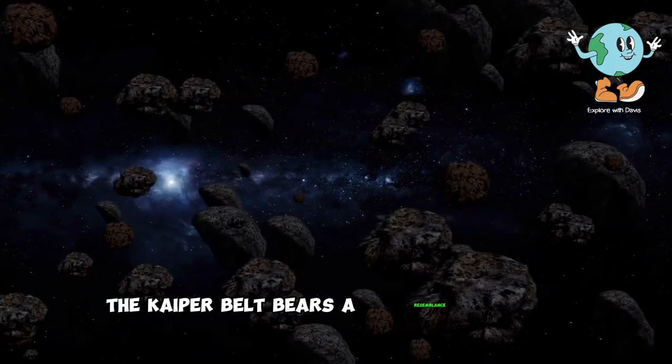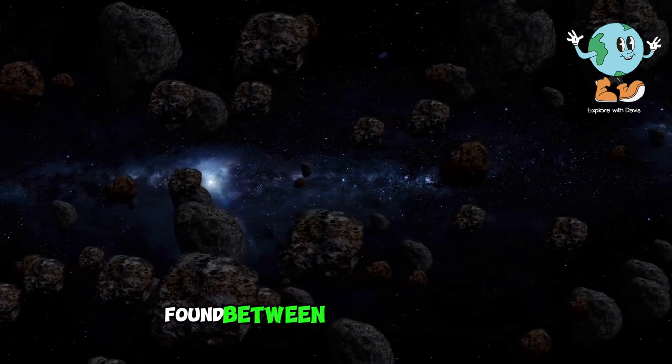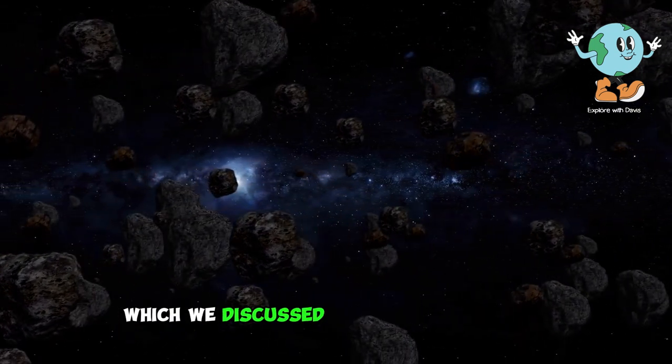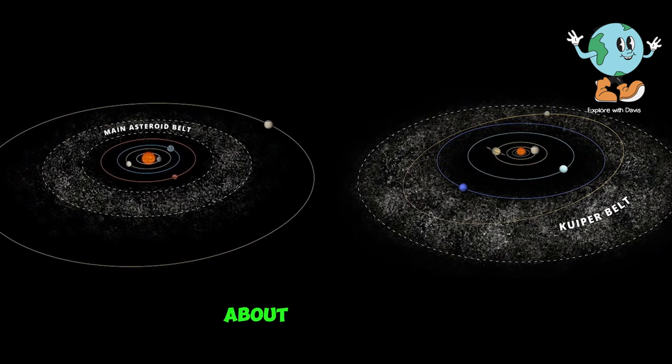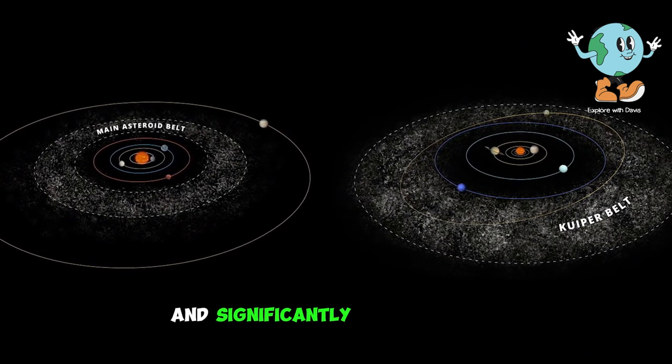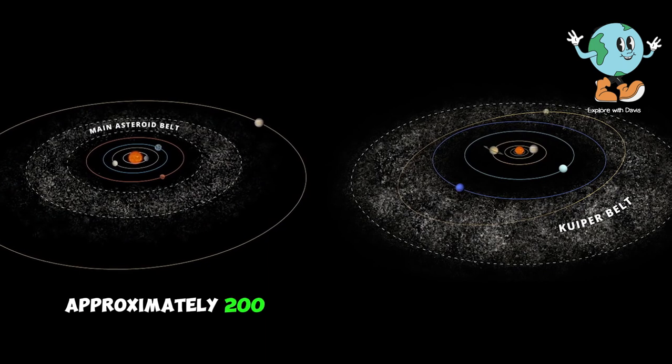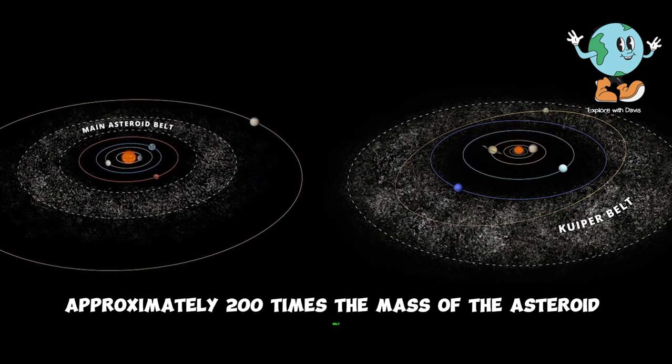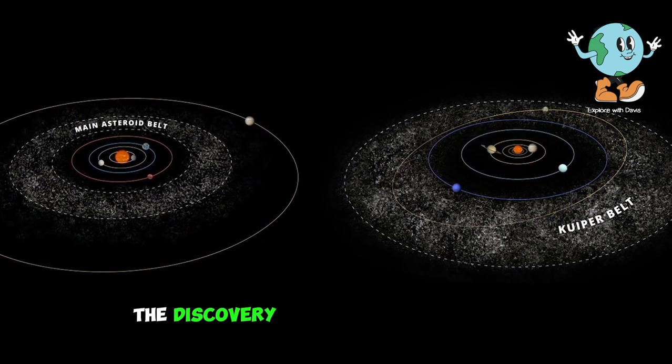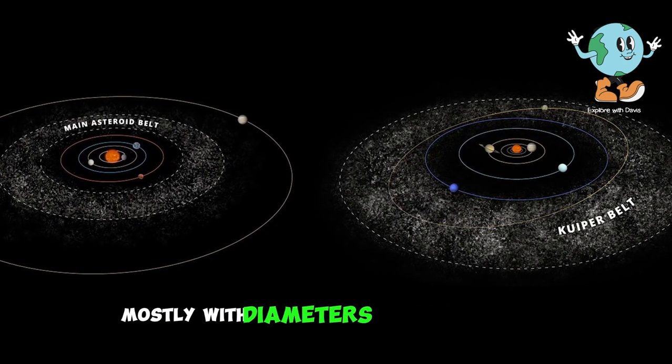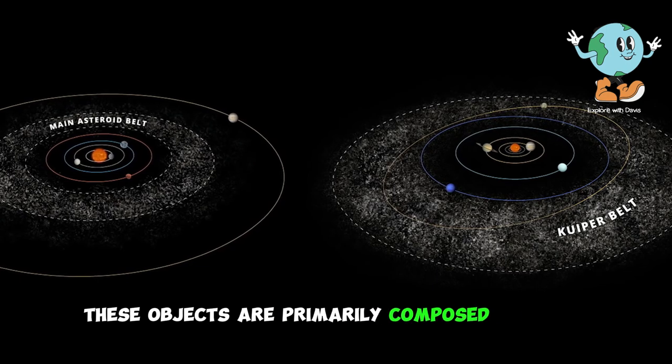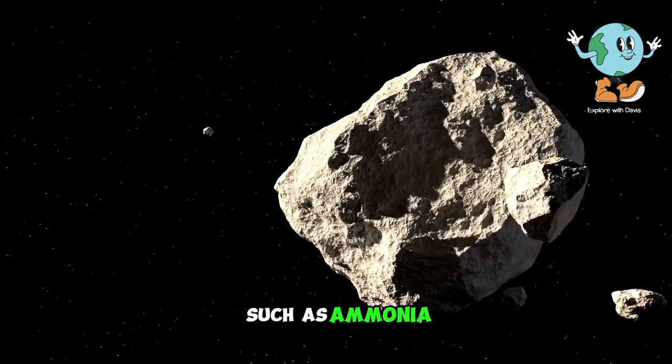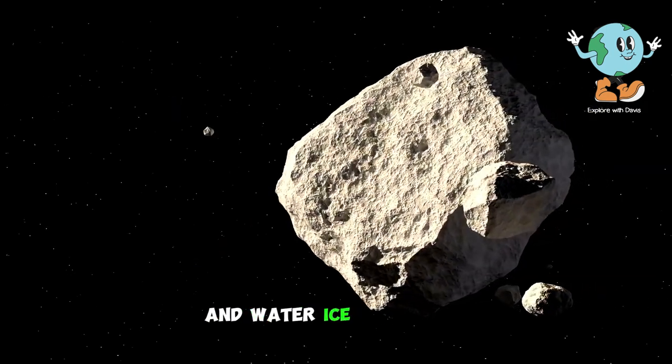The Kuiper Belt bears a resemblance in its composition to the asteroid belt found between Mars and Jupiter, which we discussed in a previous episode. However, the Kuiper Belt is immensely larger, about 20 times wider and significantly more massive, approximately 200 times the mass of the asteroid belt. This region has seen the discovery of over 100,000 objects, mostly with diameters of around 100 kilometers. These objects are primarily composed of rocks, hydrocarbons such as ammonia and methane, and water ice.